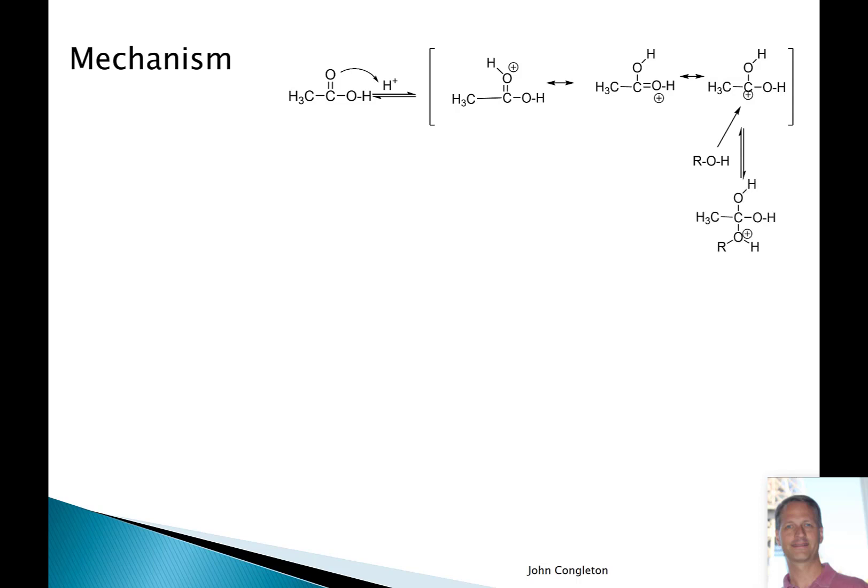That gives us our protonated ester hydrate that is then deprotonated to form the final ester hydrate. Our last point of business is to have one of these OH groups leave as water and reform our carbonyl. We'll do a protonation, eliminate water, and then lose the H to give us our final product, the ester.